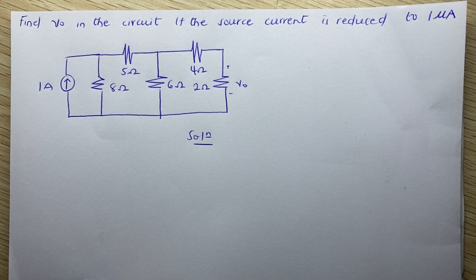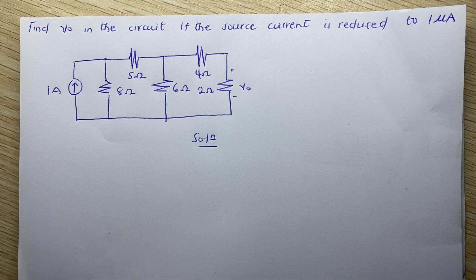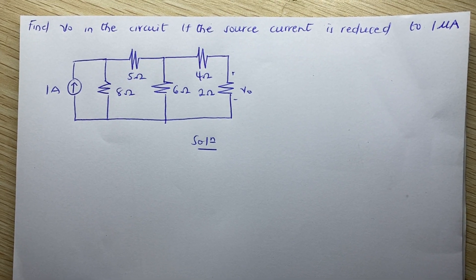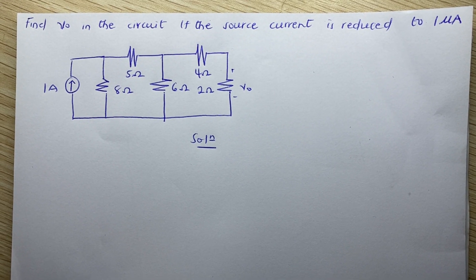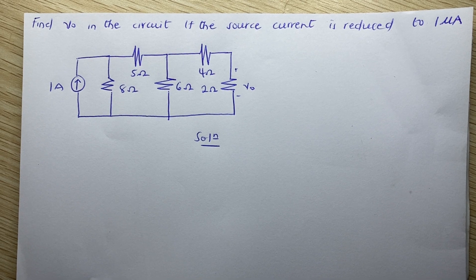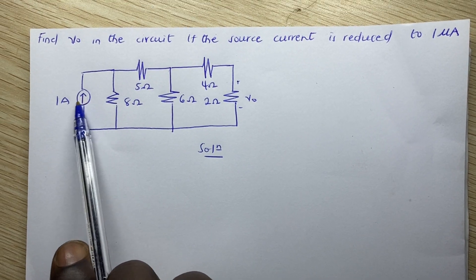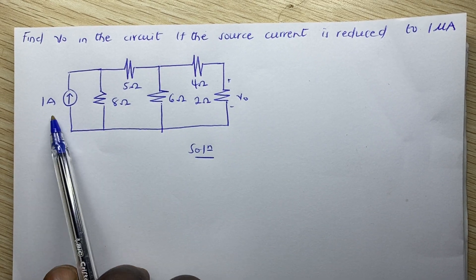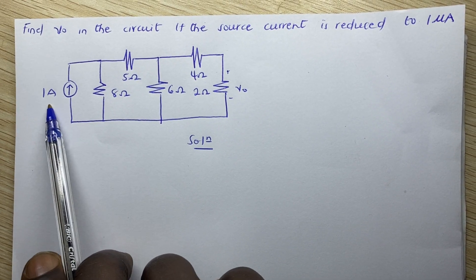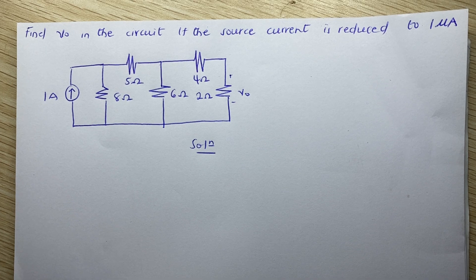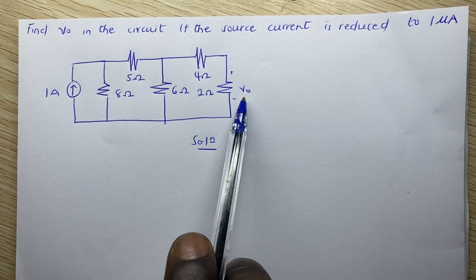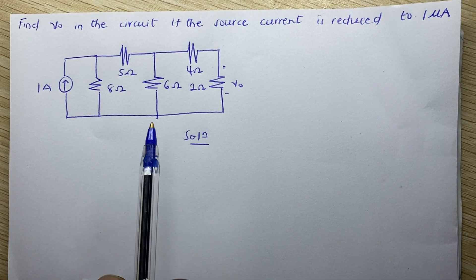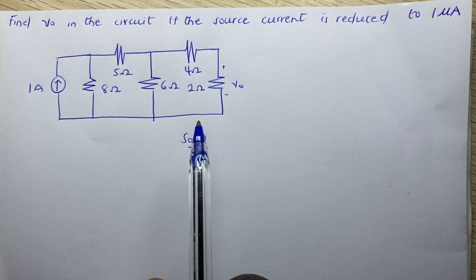Welcome to Bright Engineering. Today we are going to look at the linearity of a circuit. The question asks us to find v_naught in the circuit if the source current is reduced to one micro amp. We have a circuit with a source current, and we need to find v_naught when the current changes from one amp to one micro amp. To do this, we first find v_naught using the one amp source.